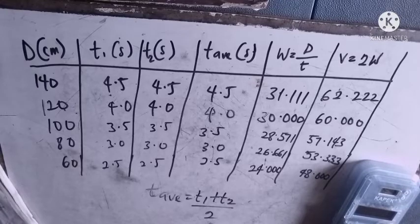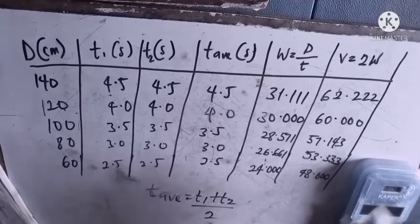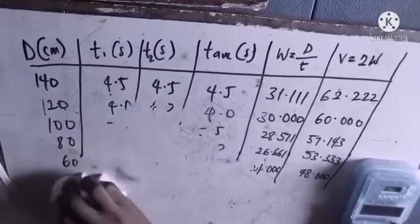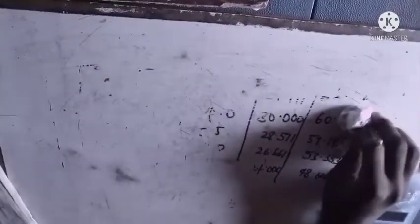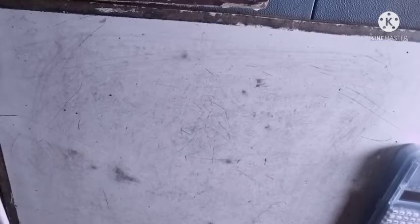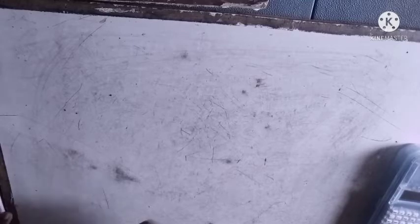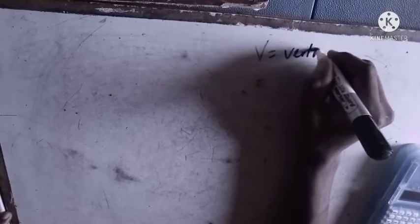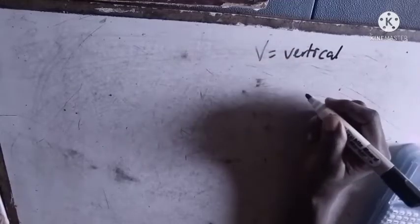After you are done with your table, the next thing you have to jump to is your graph. How do we plot our graph? They will give you what to plot against what. They ask us to plot a graph with v on the vertical axis and t-average on the horizontal axis.